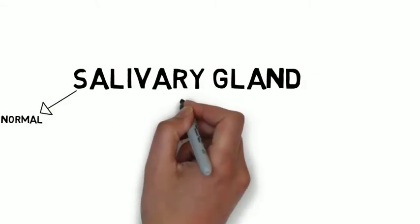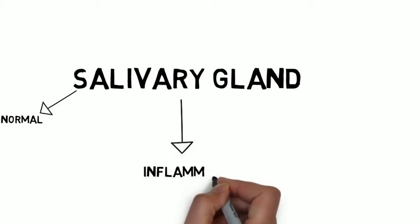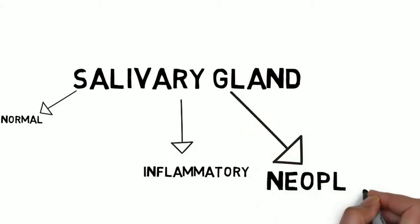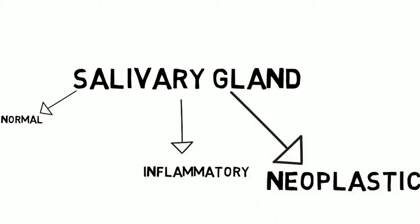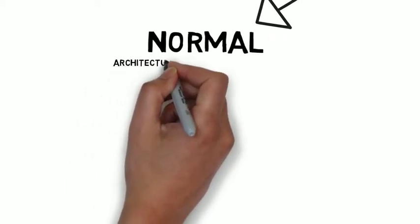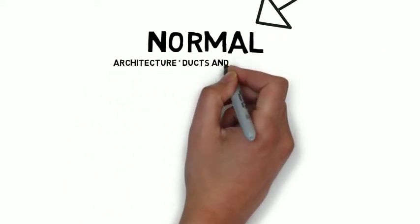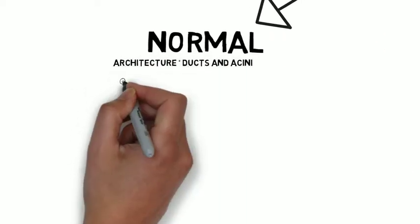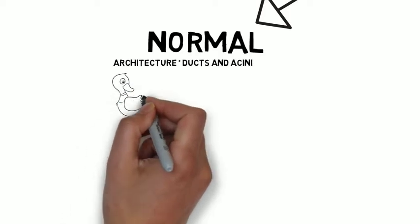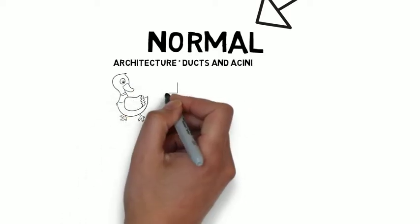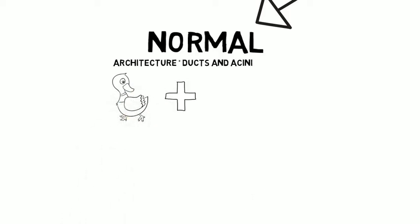Salivary gland pathology is divided into normal, inflammatory, and neoplastic. Let's take a minute to revisit normal. Normal architecture consists of ducts and acini throughout the salivary gland system, as you can see here.